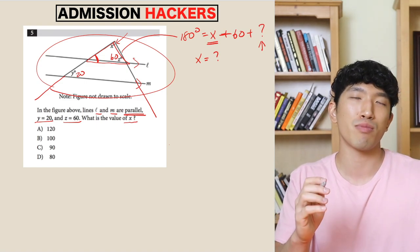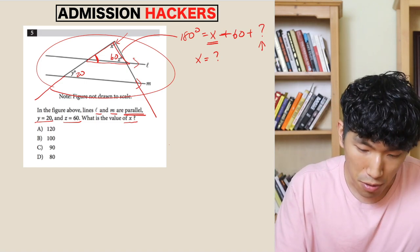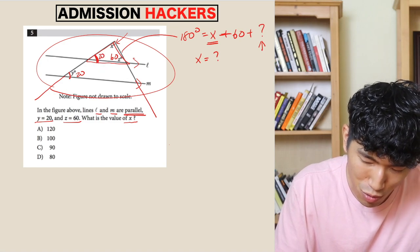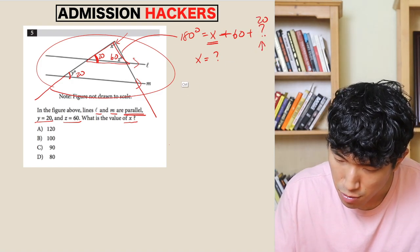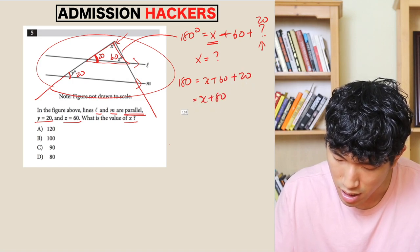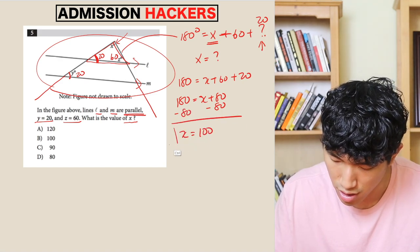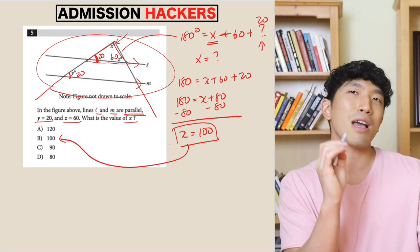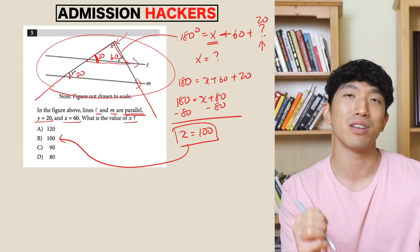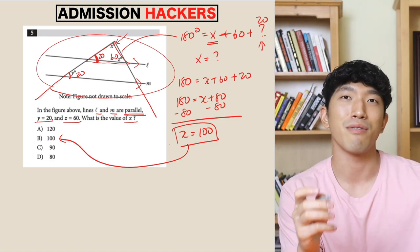How do we find the unknown angle? Remember, parallel lines are always testing which angle is the same as which one. If you look at this 20 right here, we know this angle is corresponding to this angle, which means this unknown angle is going to be 20. So we can rewrite it as: 180 equals X plus 60 plus 20, which is X plus 80 equals 180. Subtract 80 from both sides, and X equals 100. So the answer is going to be B. Angle questions are really, really easy as long as you know what to think about — corresponding angles and vertical angles.